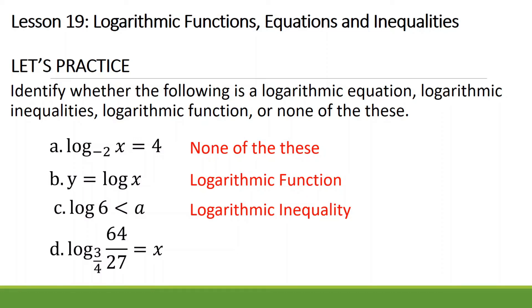Next: logarithm of 64 over 27 base 3/4 equals x. It involves a single variable and also an equal sign, so this is a logarithmic equation. Got it? Okay, good.